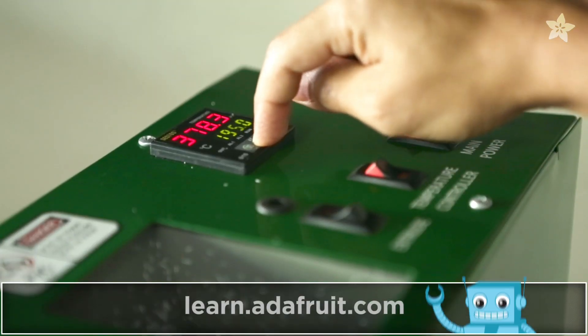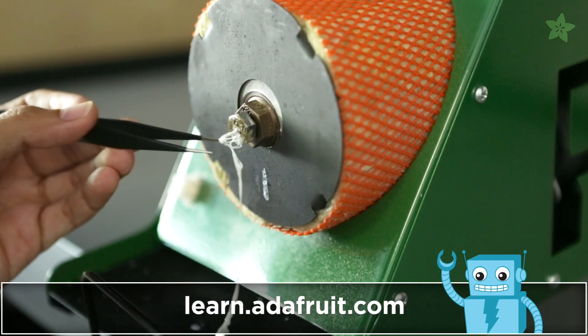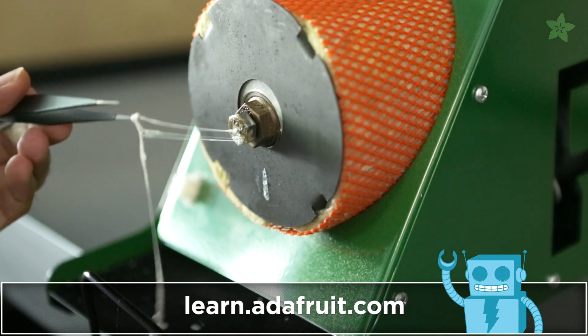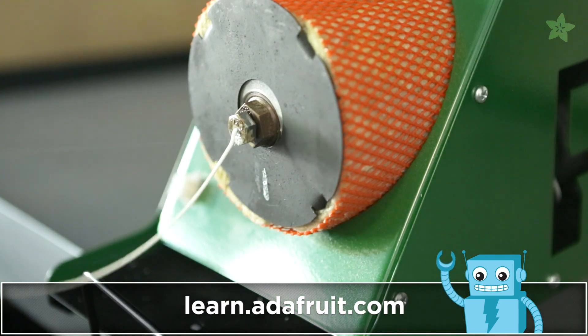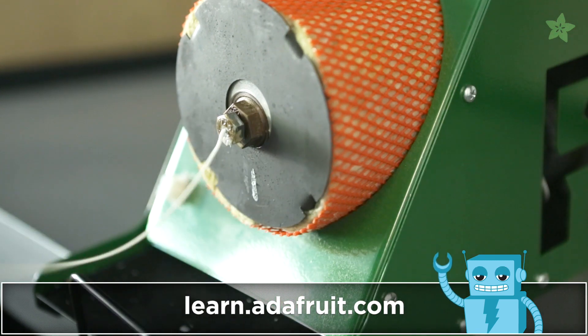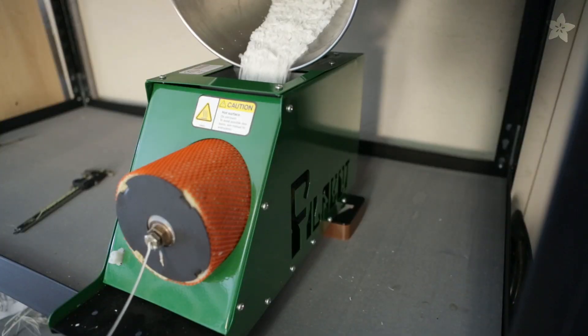Temperature and extrusion settings vary from material. Our guide on the Adafruit learning system has all the details. To get a consistent filament diameter, we'll need to let the filament extrude for a while. You'll need to have a good amount of recycled mulch for your first batch.